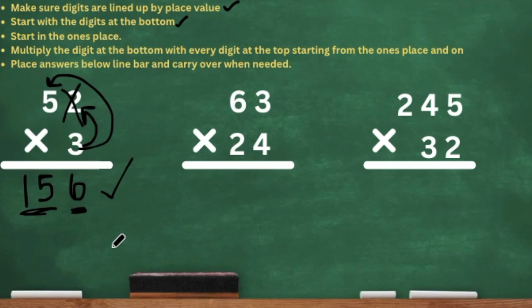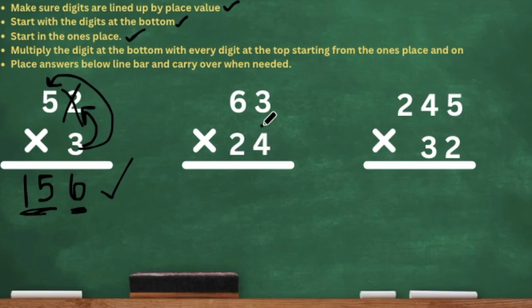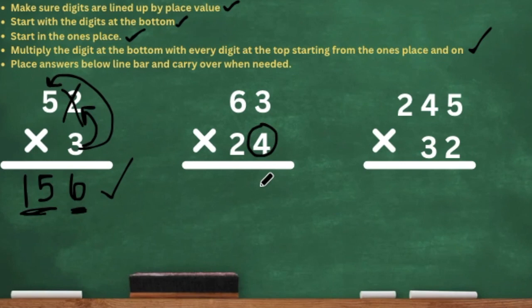So we have 63 times 24. Now we have a two-digit by two-digit — before we just had a two-digit by one-digit, but now we have two-digit by two-digit. I know it's going to take a lot more work, but let's just do it step by step. We have our digits lined up by place value, and then we're going to start with the digits at the bottom. The first one we're going to start with is the 4 because it is in the ones place. Multiply the digit at the bottom with every digit at the top, starting from the ones place and on — so we have 4 times 3.